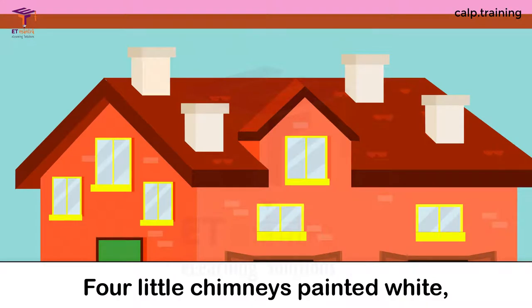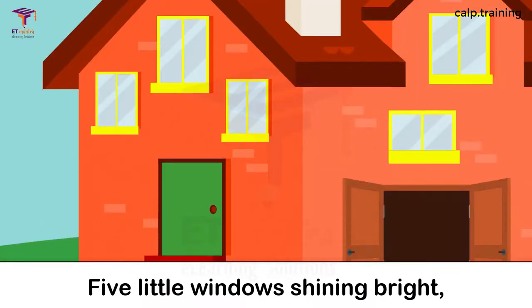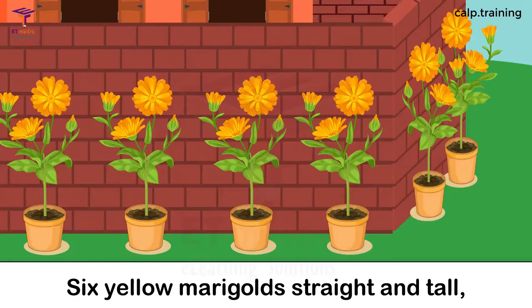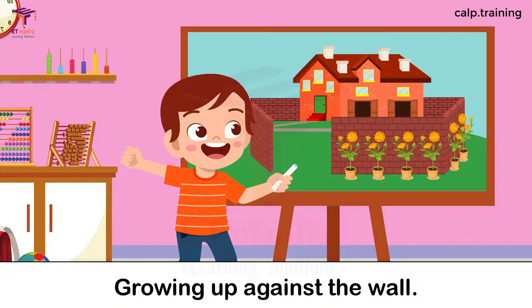Four little chimneys painted white, five little windows shining bright, six yellow marigolds straight and tall, growing up against the wall.